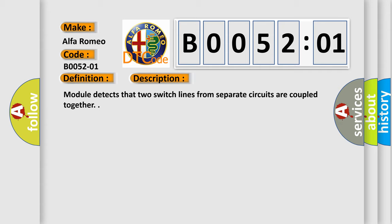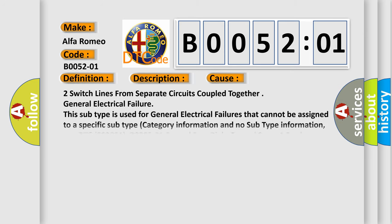Module detects that two switch lines from separate circuits are coupled together. This diagnostic error occurs most often in these cases: two switch lines from separate circuits coupled together general electrical failure.